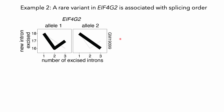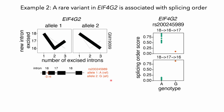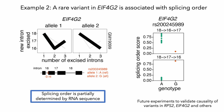In the second example, in one cell line we found a splicing order difference in the gene EIF4G2. Interestingly, this individual carries a rare heterozygous variant 3 nucleotides upstream of the 3-prime splice site of intron 16. At this position, when the reference A is replaced by a G, this is associated with reversal of splicing order such that intron 16 is now removed after intron 17. Together, our allele-specific analyses emphasize that splicing order is indeed at least partially determined by RNA sequence.